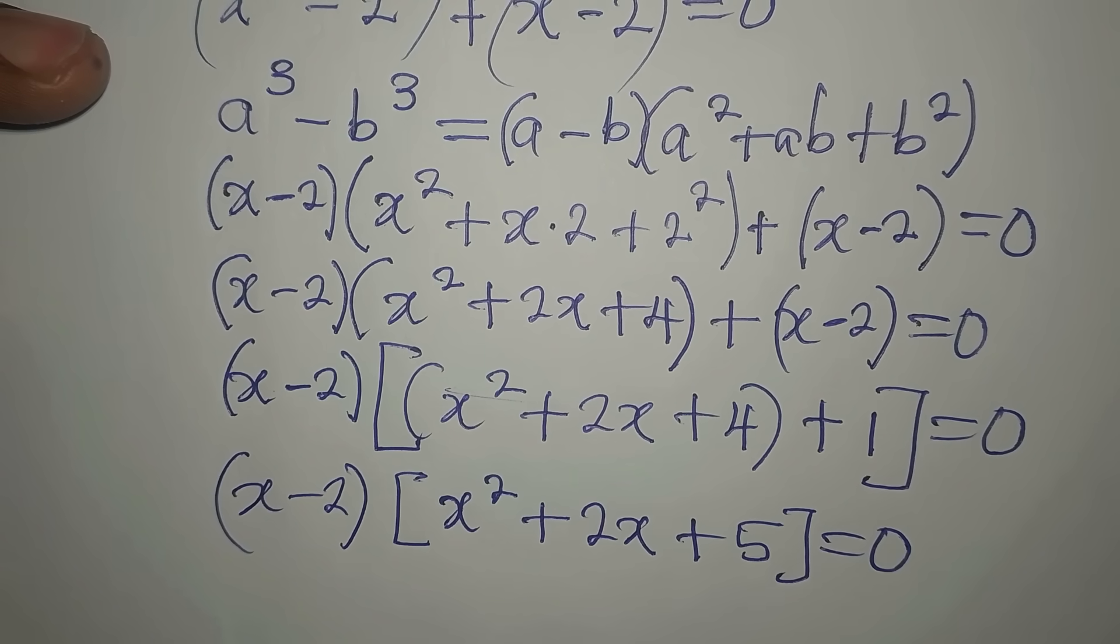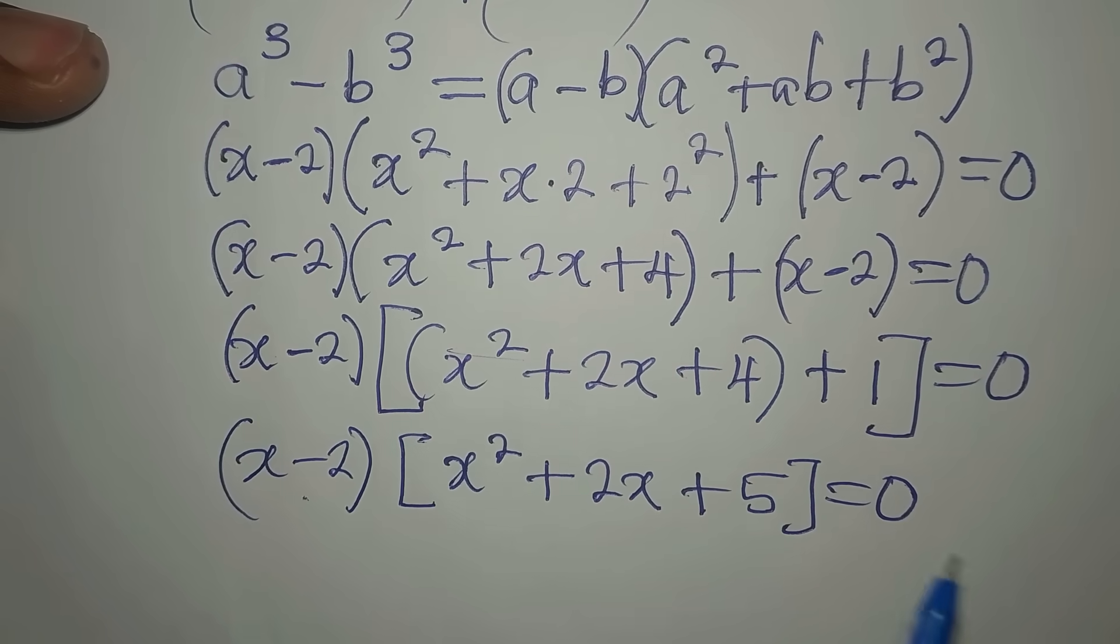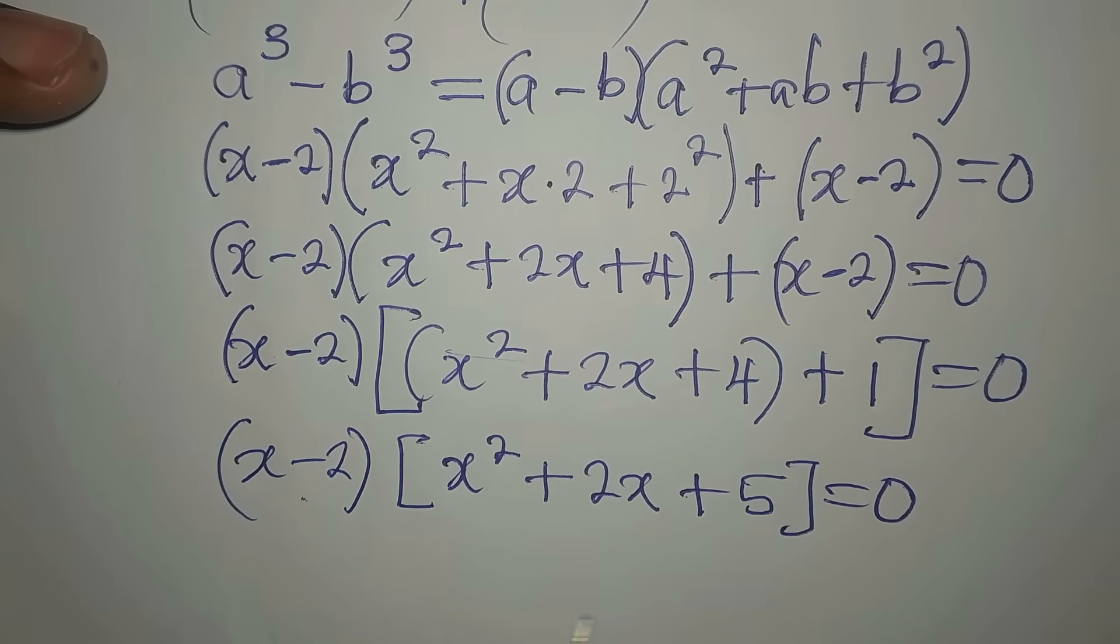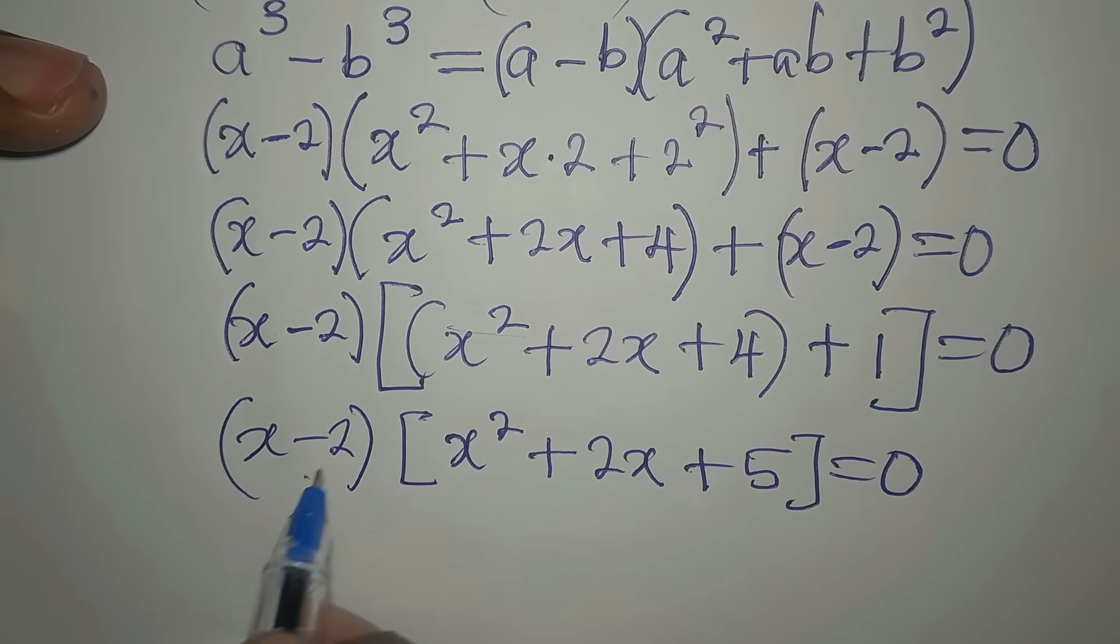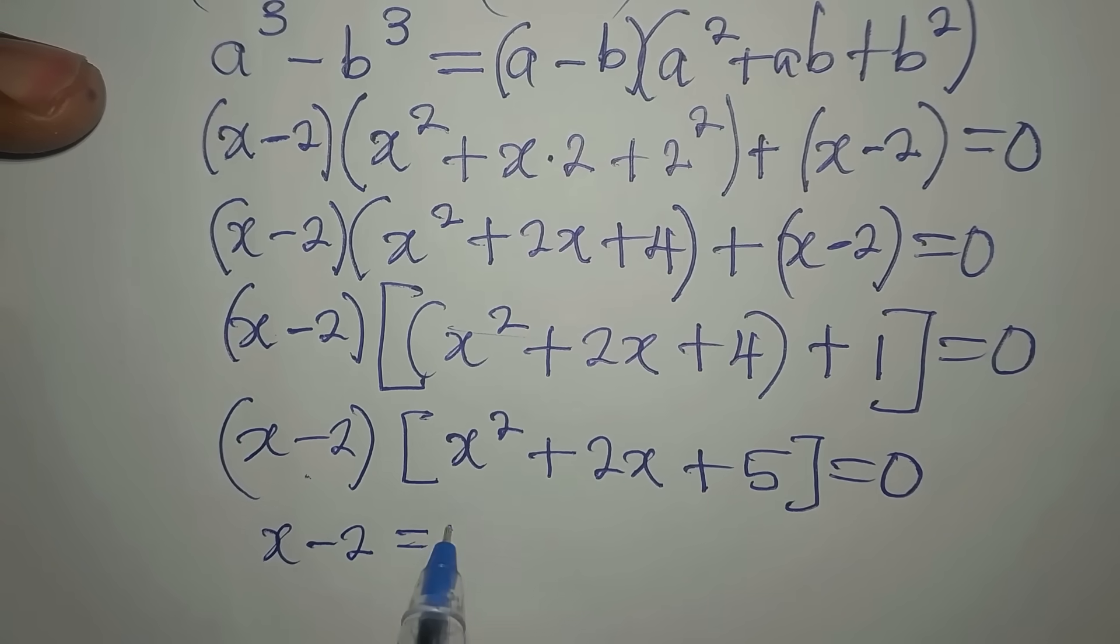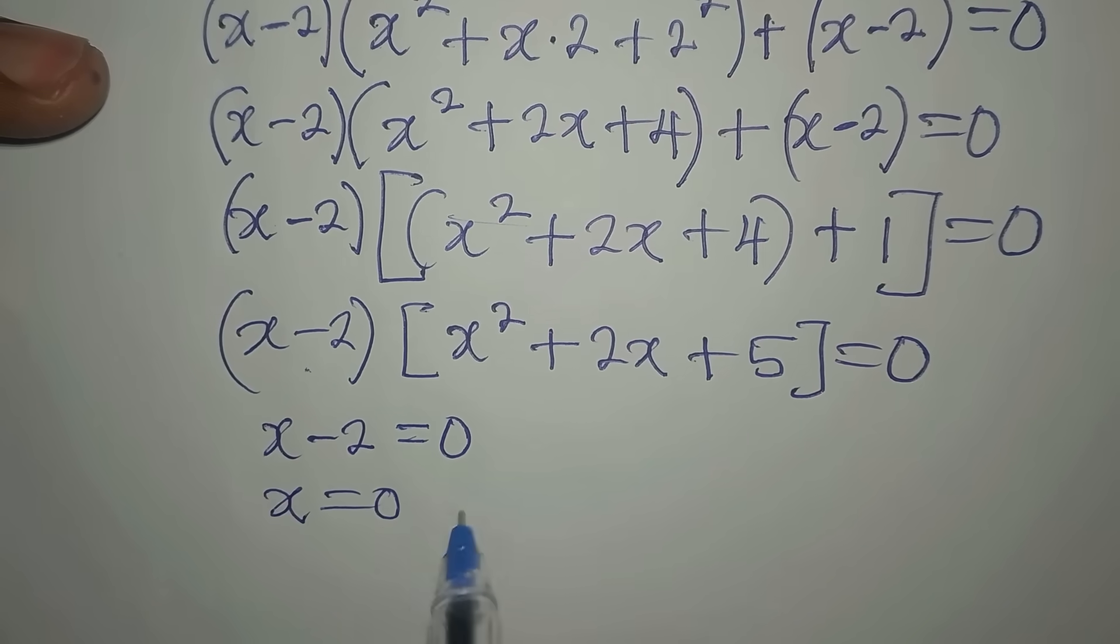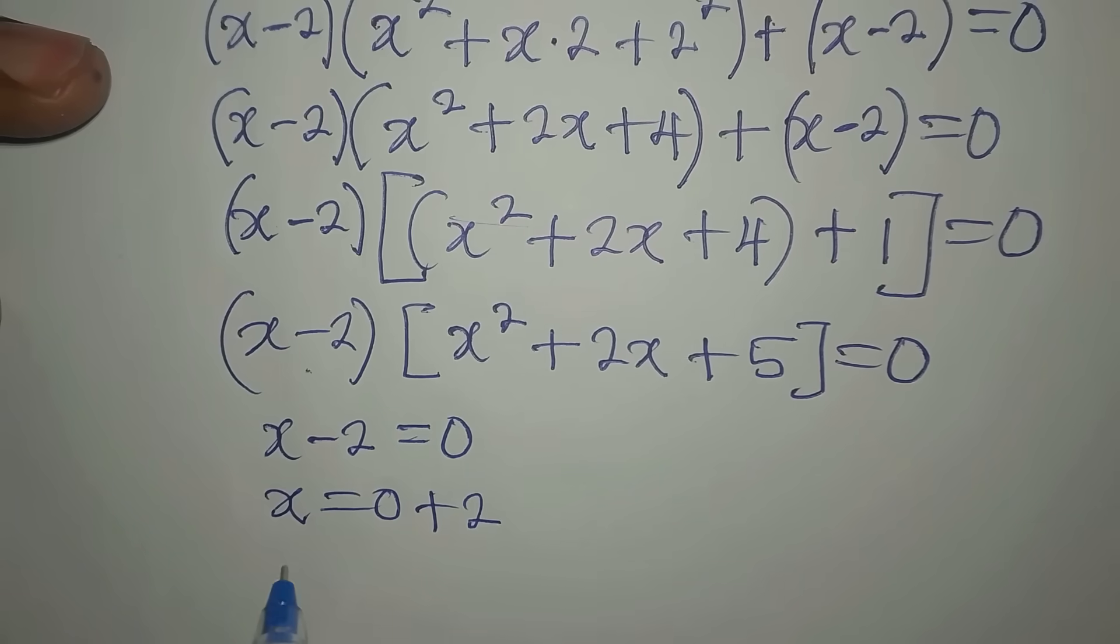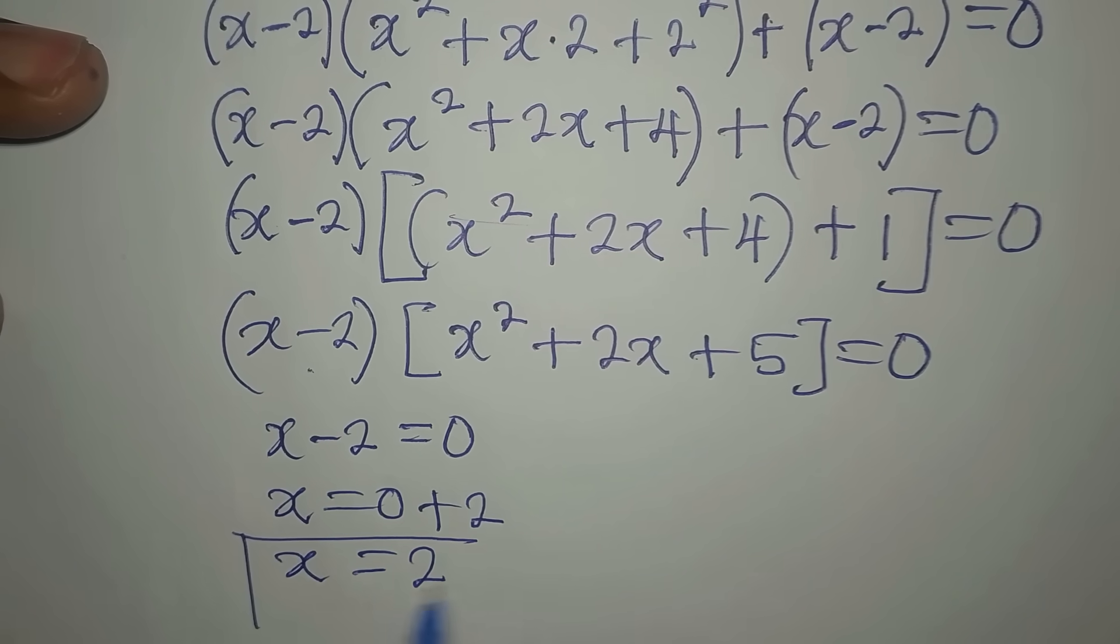Now we are multiplying the two brackets to get 0. This times this to get 0. And every time you multiply two terms to get 0, one of them must be 0. If not, you will not have 0. So we will say that let x minus 2 be equal to 0 first, so that x will be 0 plus 2, and then our x is 2. This is one of the values of x.